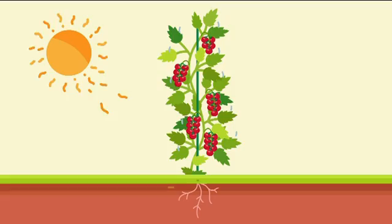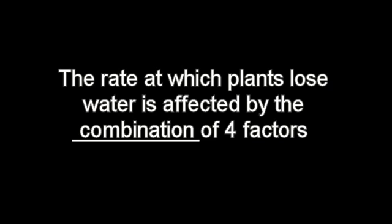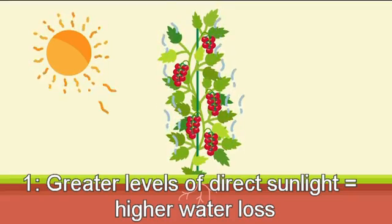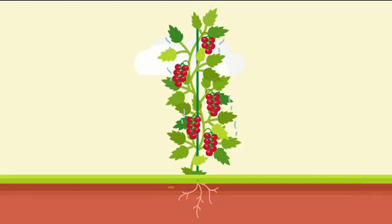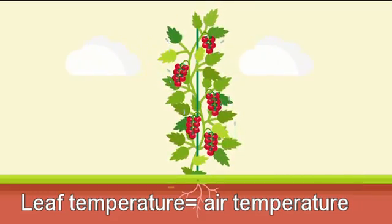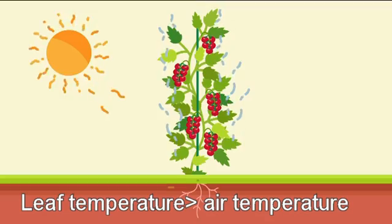When leaves outside are exposed to the warming effect of direct sunlight, the leaves will start to transpire or lose water. The rate that plants lose water is affected by the combination of four factors. Number one: the amount of direct sunlight, since it warms up the leaf faster than the air. If it is a cloudy day, the leaf temperature will be similar to the air temperature, so the plants will not lose a lot of water. But if it is sunny, the leaf temperature will go up, causing an increase in the transpiration rate.